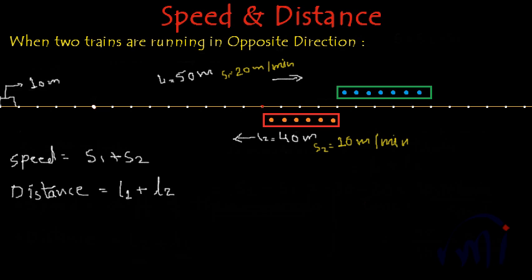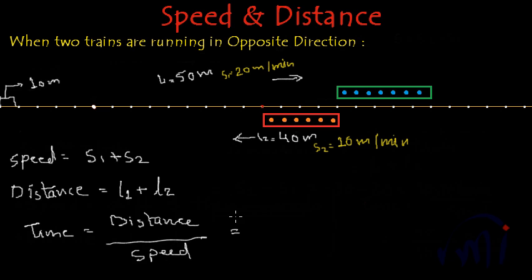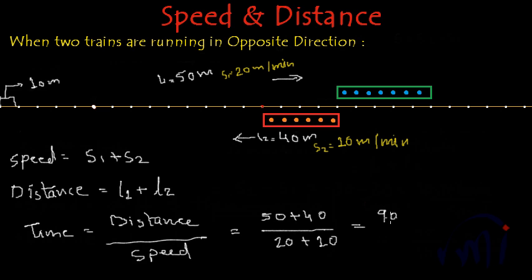So how much time will they take to cross each other completely? Time equals distance by speed. The distance is the sum of both their lengths: 50 plus 40. The speed when they are running in opposite directions is also the sum of both their speeds: 20 plus 10. So time equals 90 divided by 30, which equals 3 minutes. It will take 3 minutes for these two trains to cross each other completely.